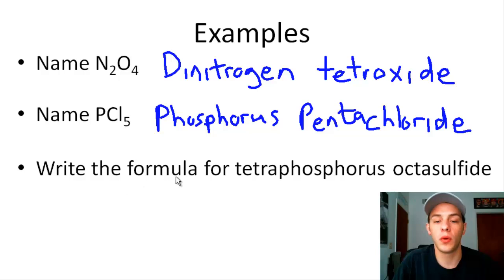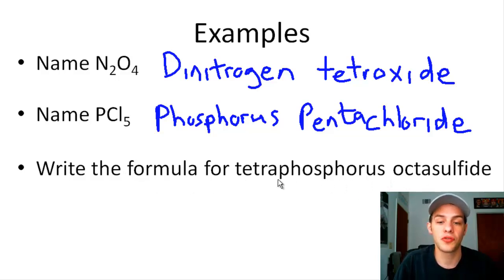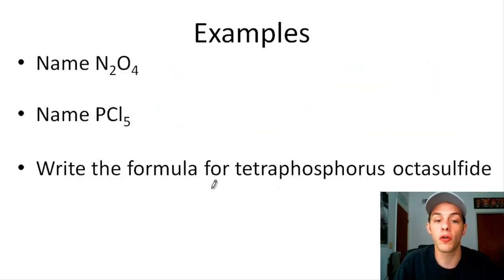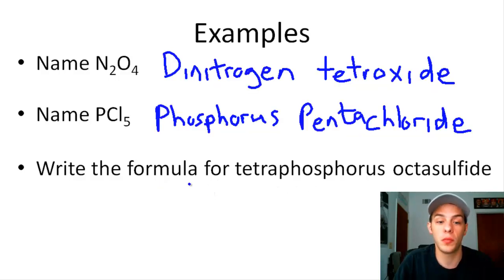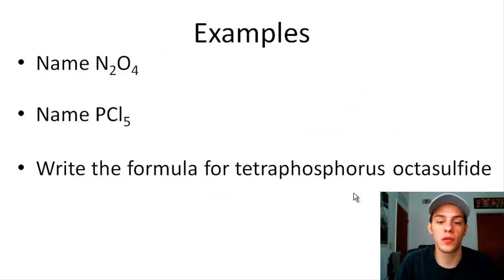In this example, we're writing the formula for a molecular compound given its name: tetraphosphorous octasulfide. Tetraphosphorous tells us there are four phosphorus atoms, so P4. Octasulfide tells us there are eight sulfur atoms. So the formula is P4S8.